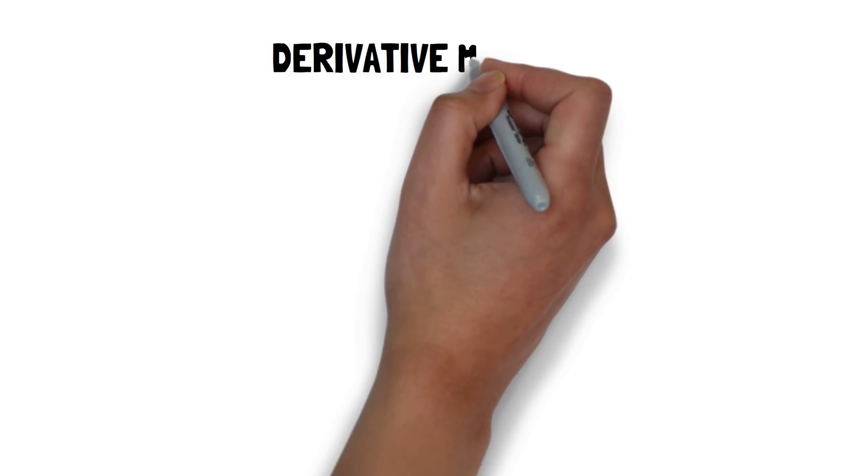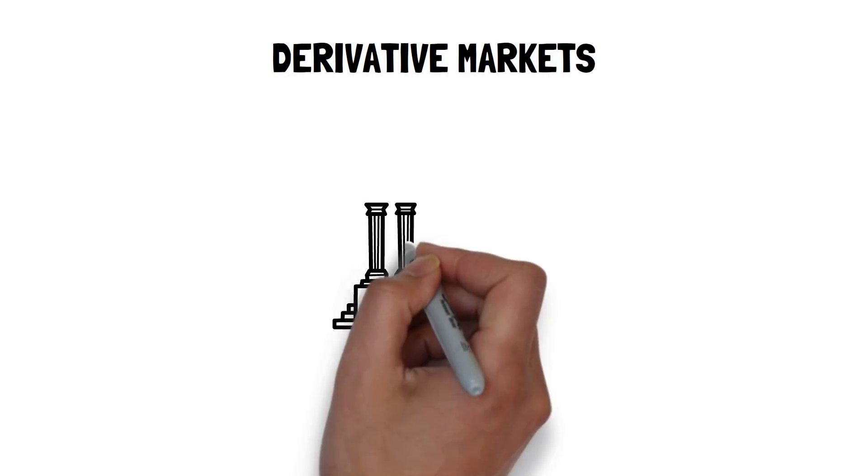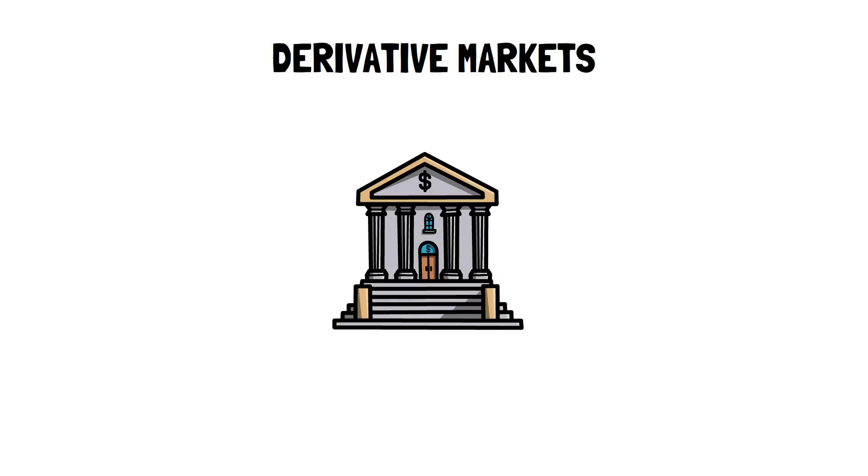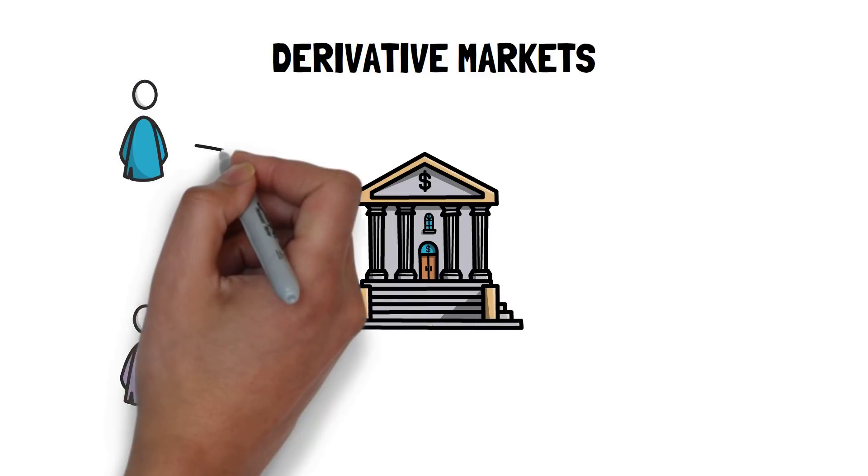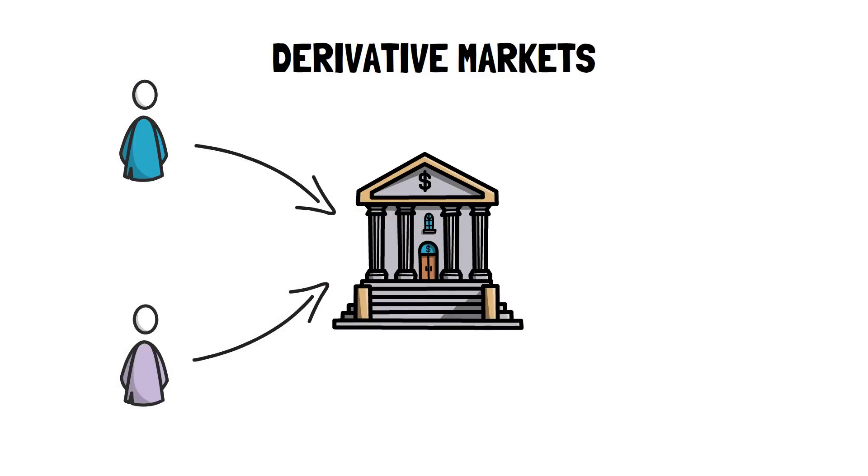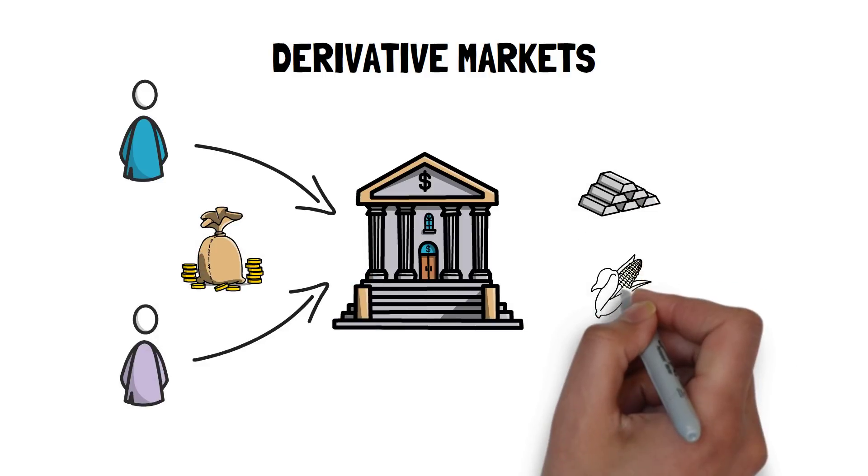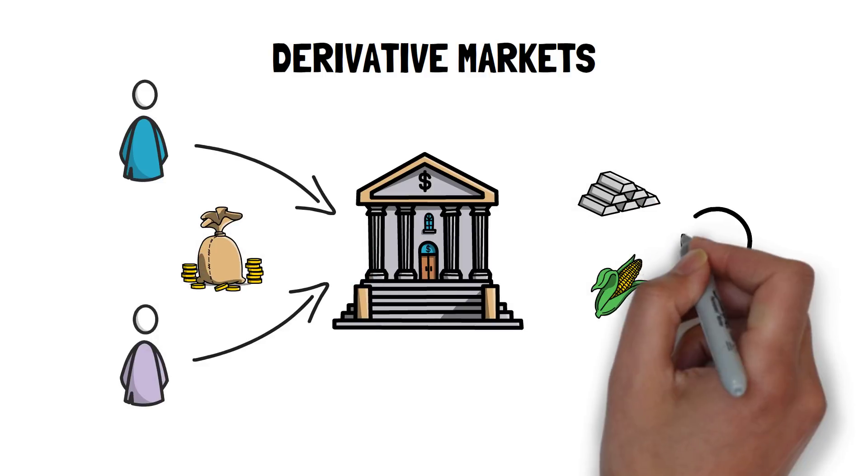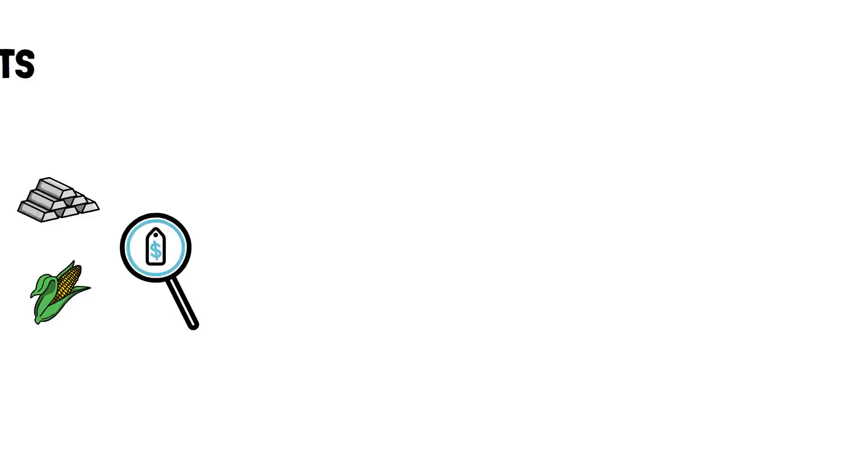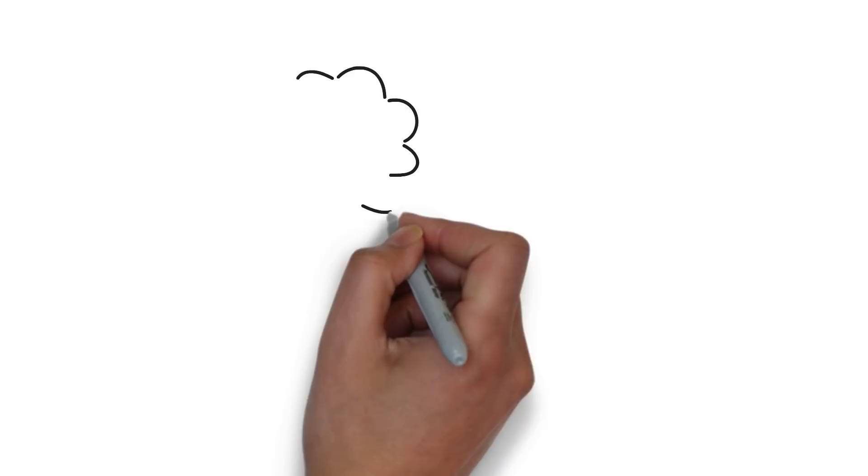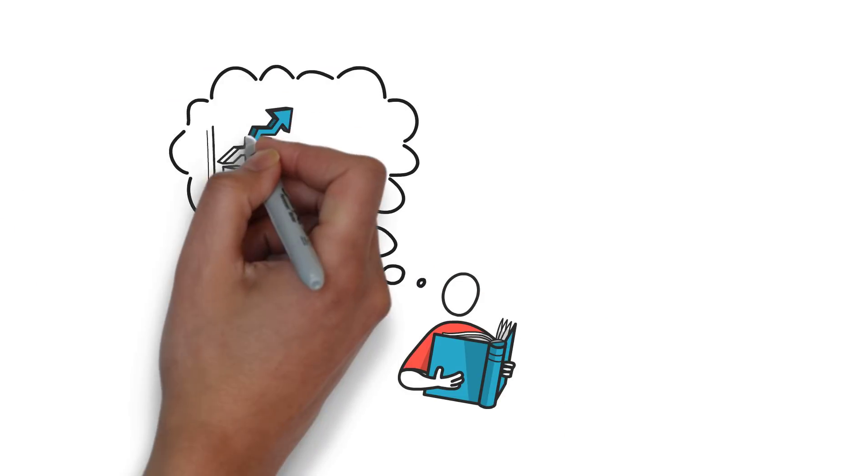In general, derivatives markets help with the price discovery of different assets as they provide a place where all market participants can meet and easily trade, usually in big sizes. For certain financial instruments, derivatives markets can even become their primary markets for price discovery. I hope this gives a good basic overview of what perpetual contracts are.